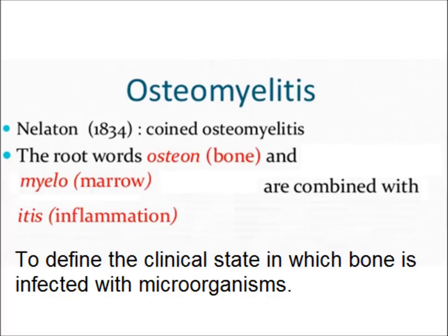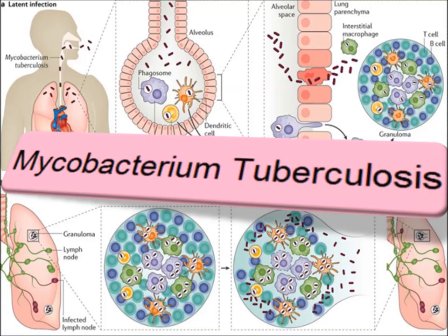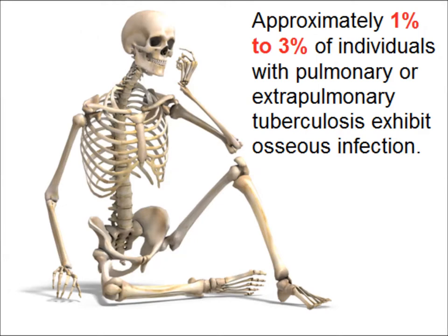Osteomyelitis means bone inflammation — a clinical state in which bone is infected with microorganisms, and in the case of tuberculosis, infection with Mycobacterium tuberculosis. Approximately 1% to 3% of individuals with pulmonary or extra-pulmonary tuberculosis exhibit osseous infection.